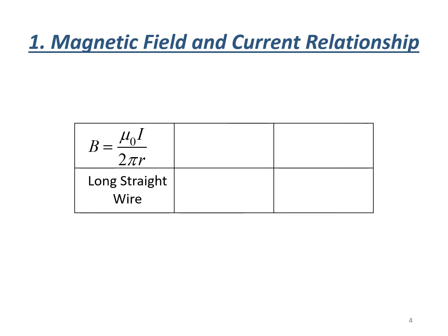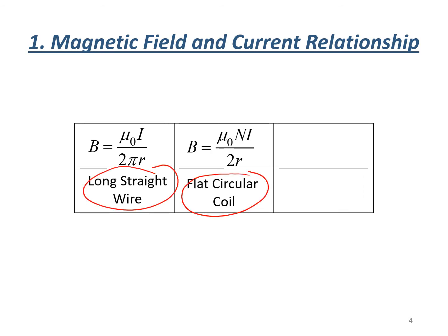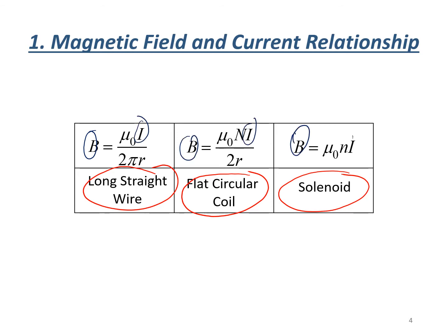Here are the various formulas we can use to calculate the strength of the magnetic field: the long straight wire conductor, flat circular coil, or the solenoid. We will not go into detail on using these formulas in this lesson. The point to note is to observe the proportional relationship between the magnetic field strength and the current — the stronger the current, the stronger the magnetic field strength; they are proportional.